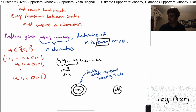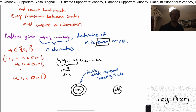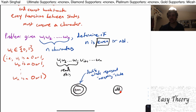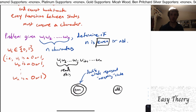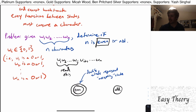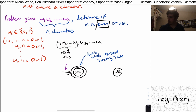Before we read any characters, we need to figure out the start state. We haven't seen W1, W2, or any characters yet — we've seen zero characters. Since zero is even, the even state should be the start state. I'll denote that with an arrow that comes in from nowhere, indicating the start state.